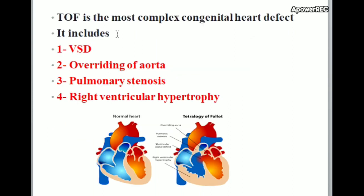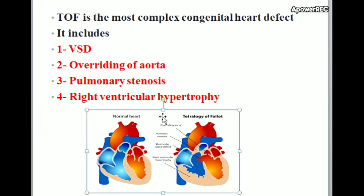TOF is the most complex congenital heart defect. It includes VSD, overriding of aorta, pulmonary stenosis, and right ventricular hypertrophy. So there are four conditions in Tetralogy of Fallot.